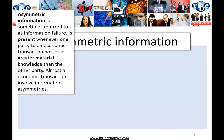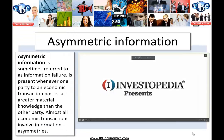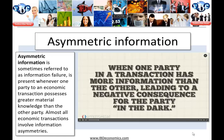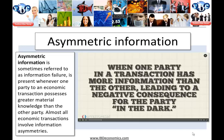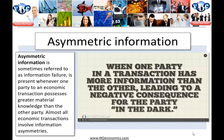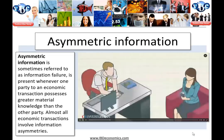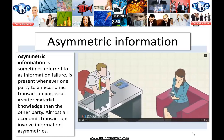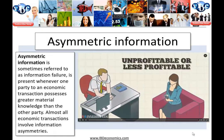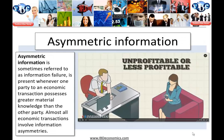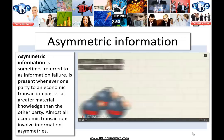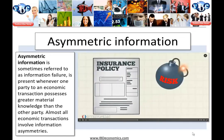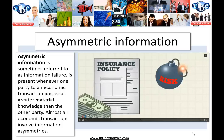Asymmetric information — what is it? Adverse selection occurs when one party in a transaction has more information than the other, leading to a negative consequence for the party in the dark. This often happens in insurance and finance-related activities when certain customers make the service being offered unprofitable or less profitable.